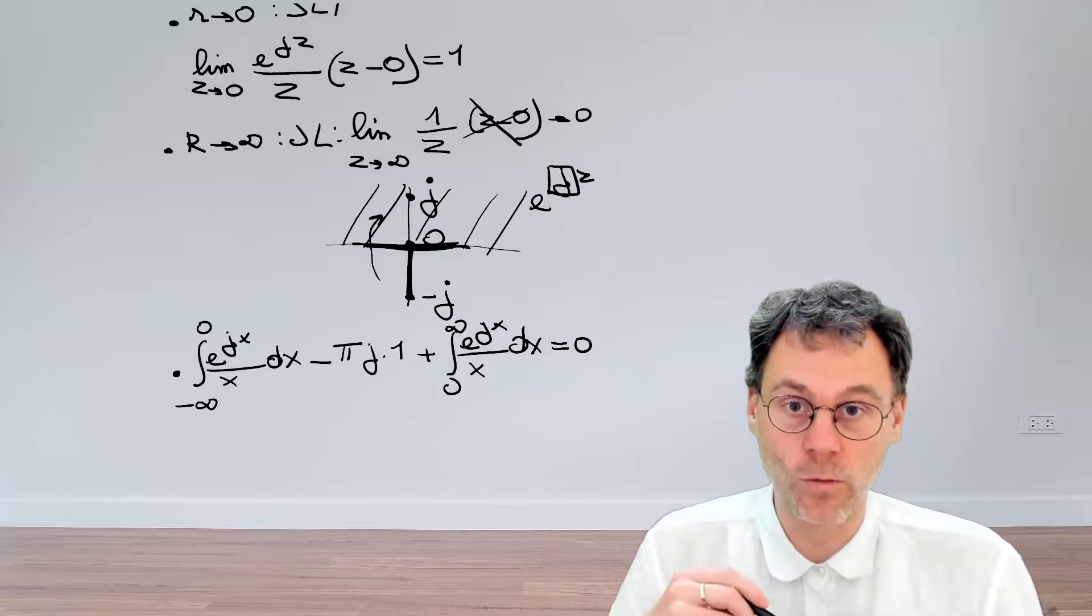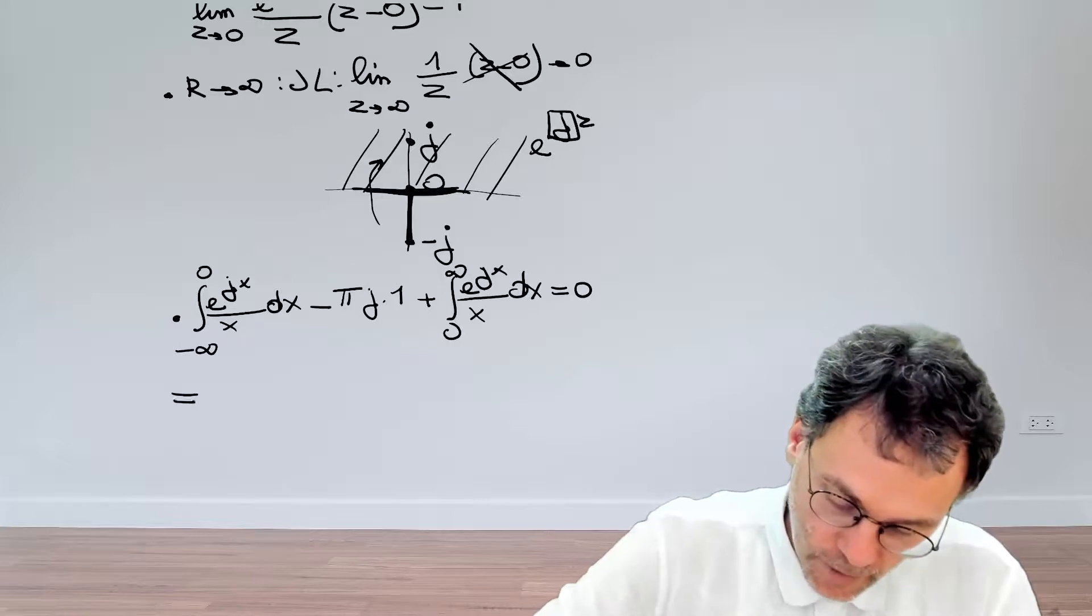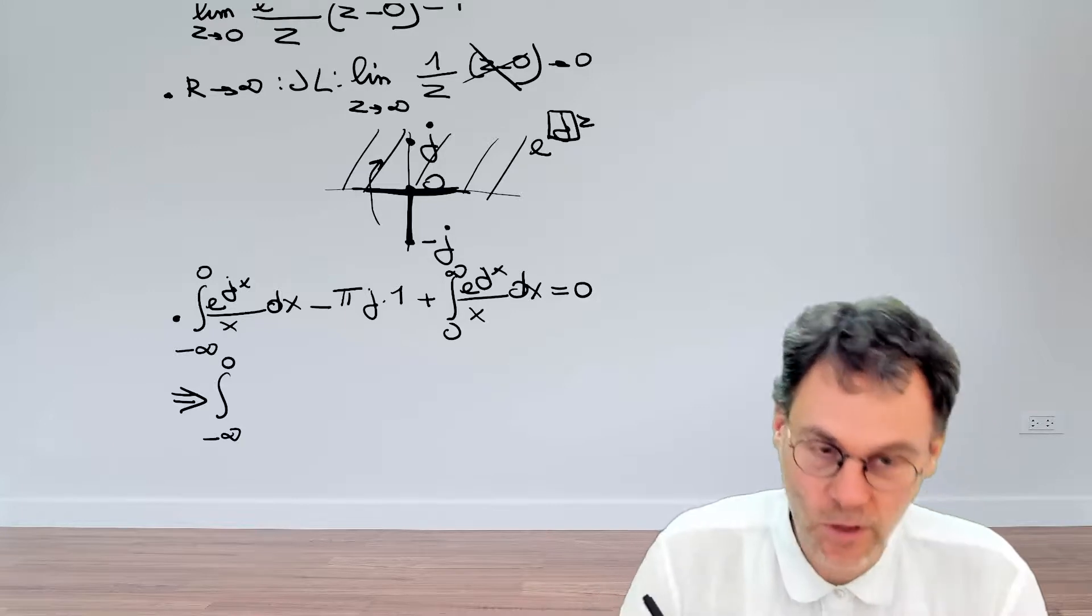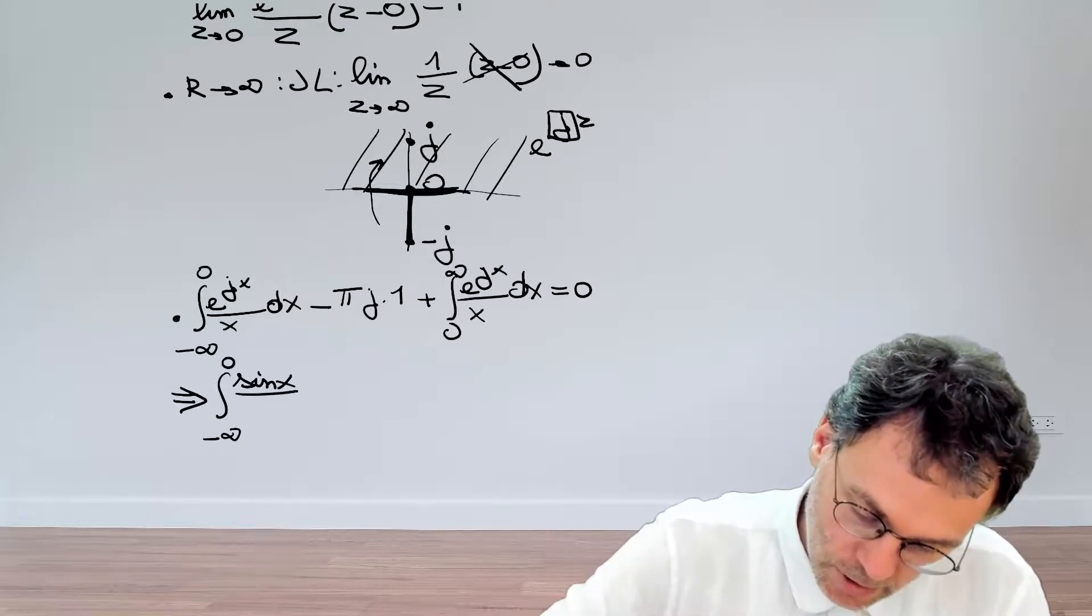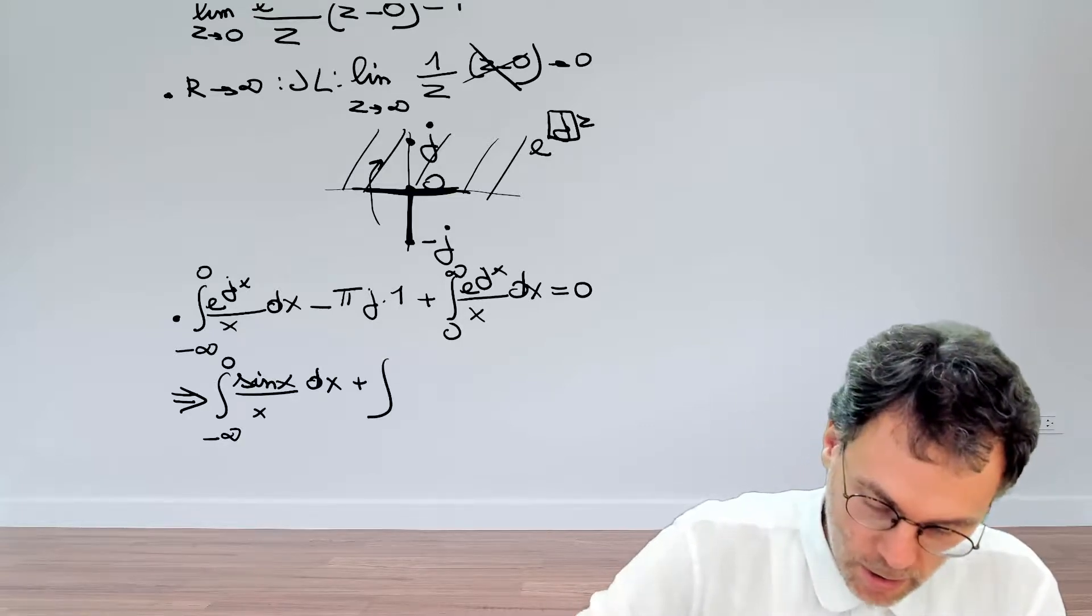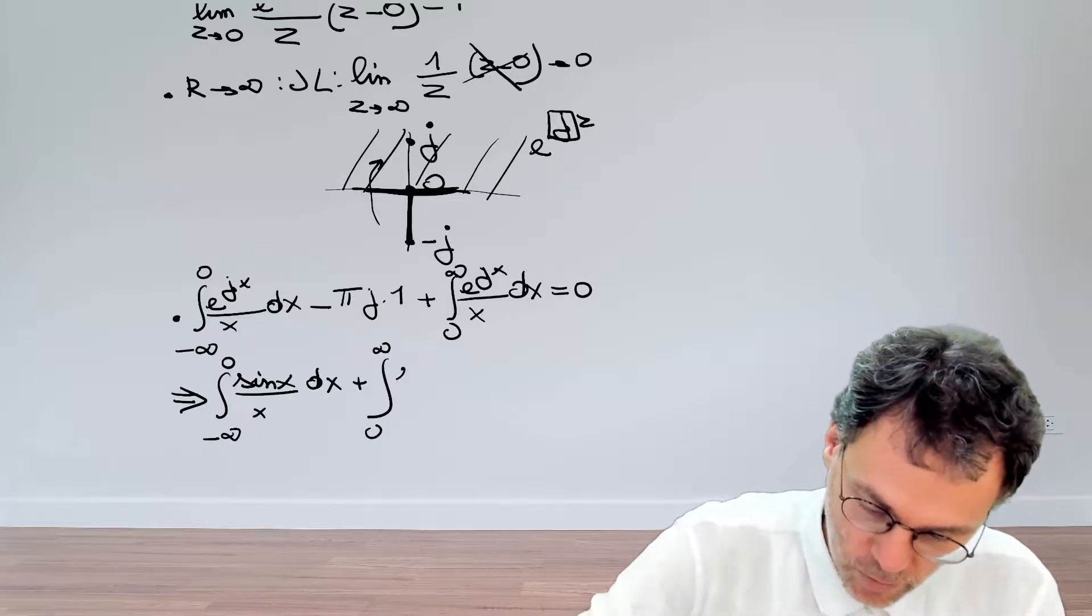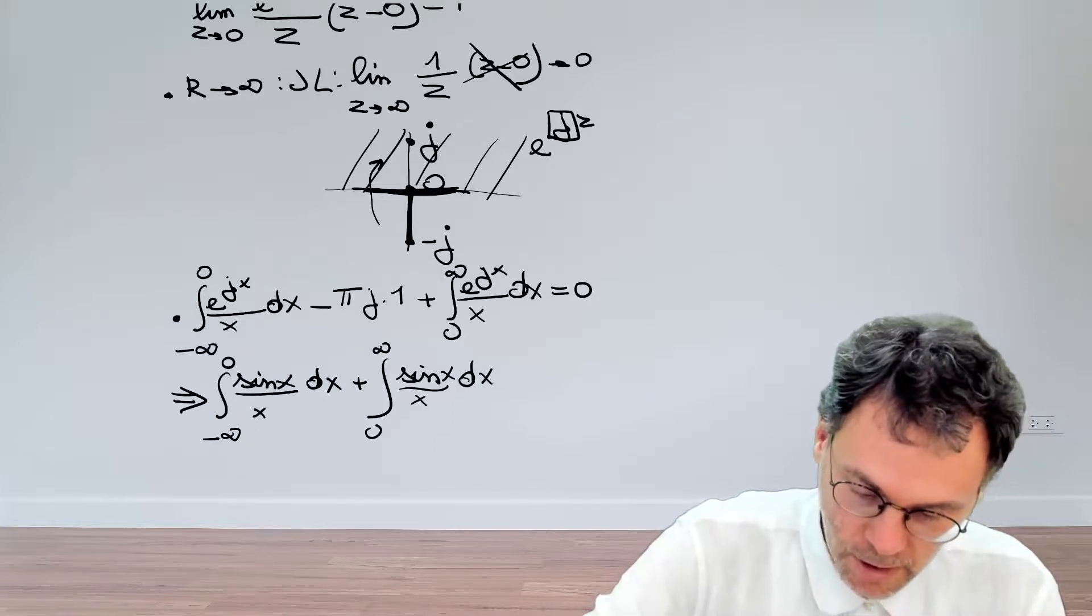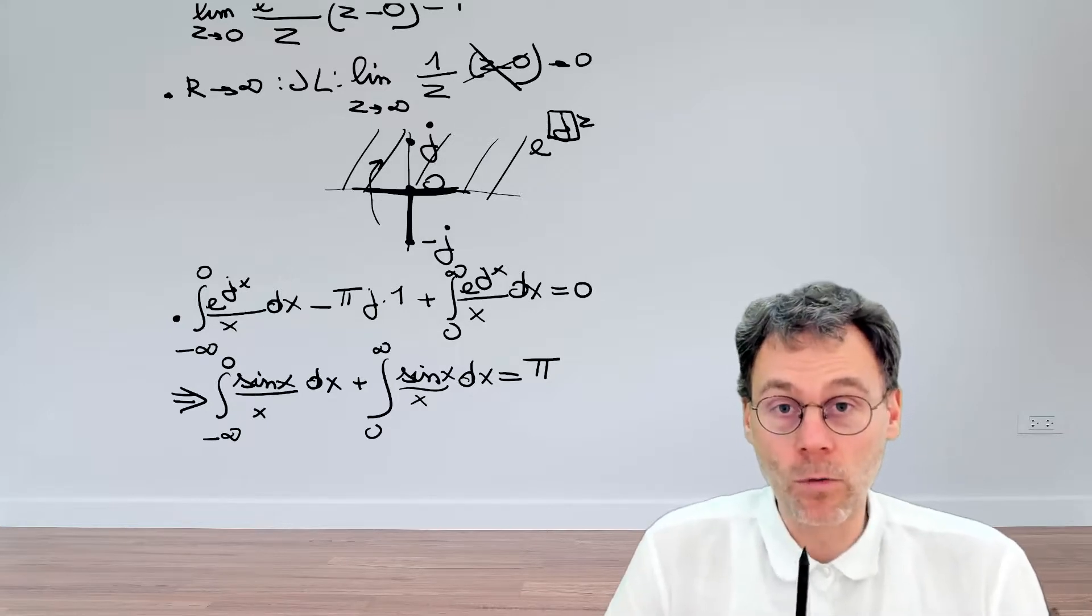Good, we're almost there. Let's take the imaginary part here. If we take the imaginary part, we have the integral from minus infinity to 0 and then the sine appears. So sine X over X DX. Let's move that other term to the right hand side later. Let's first focus on the third one. Sine X over X DX is equal to pi. Now we're almost there.